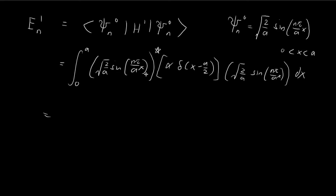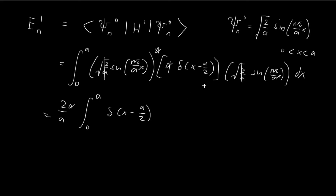Pulling out the constants, combining the two square root factors gives 2/a, and we also have α. Inside the integral, we're left with the delta function and the two sine terms, giving sine squared(nπ/a · x) dx.